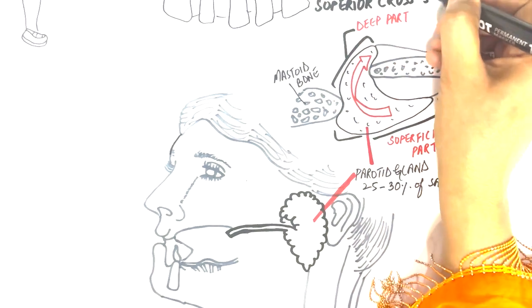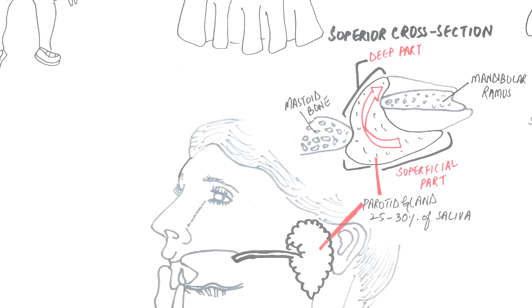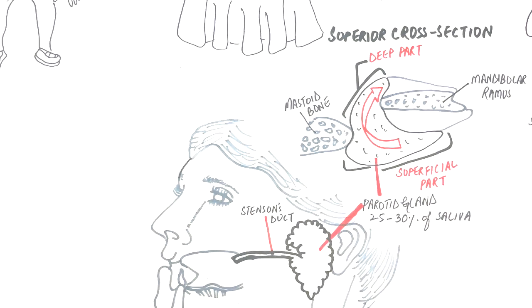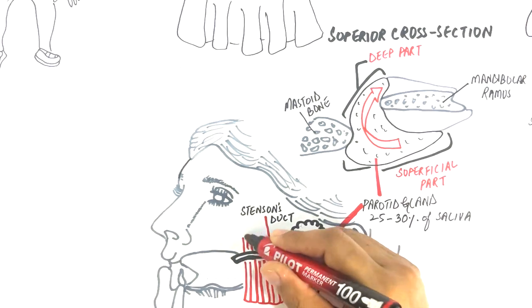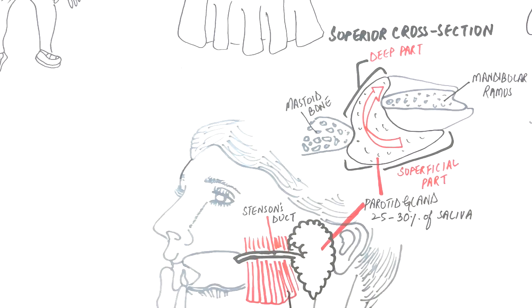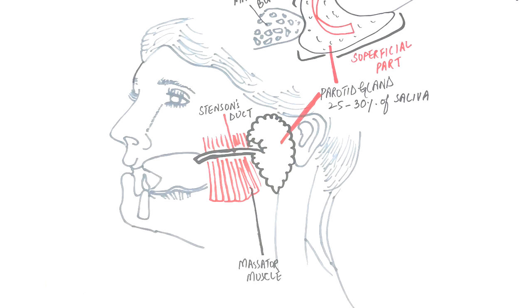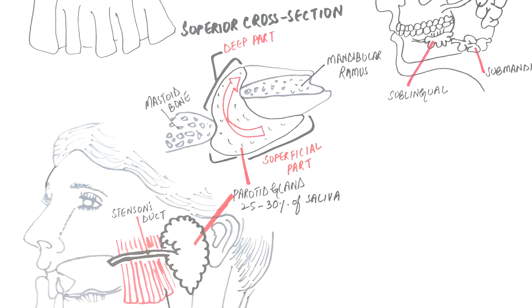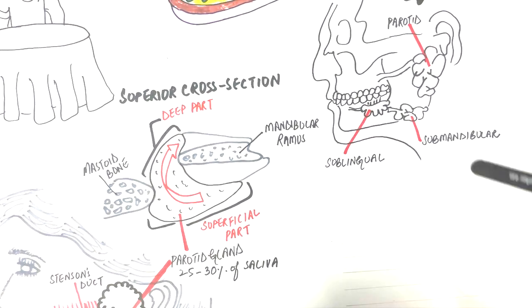The gland is pierced by the seventh cranial nerve, which is the facial nerve. This nerve lies between the superficial and deep lobes of the gland. Stenson's duct, which is the only excretory duct of the parotid gland, runs forward across the masseter muscle, reaches the anterior border of the masseter, and enters the oral cavity at a papilla opposite the maxillary second molar. The parotid gland releases its saliva into the oral cavity via Stenson's duct.